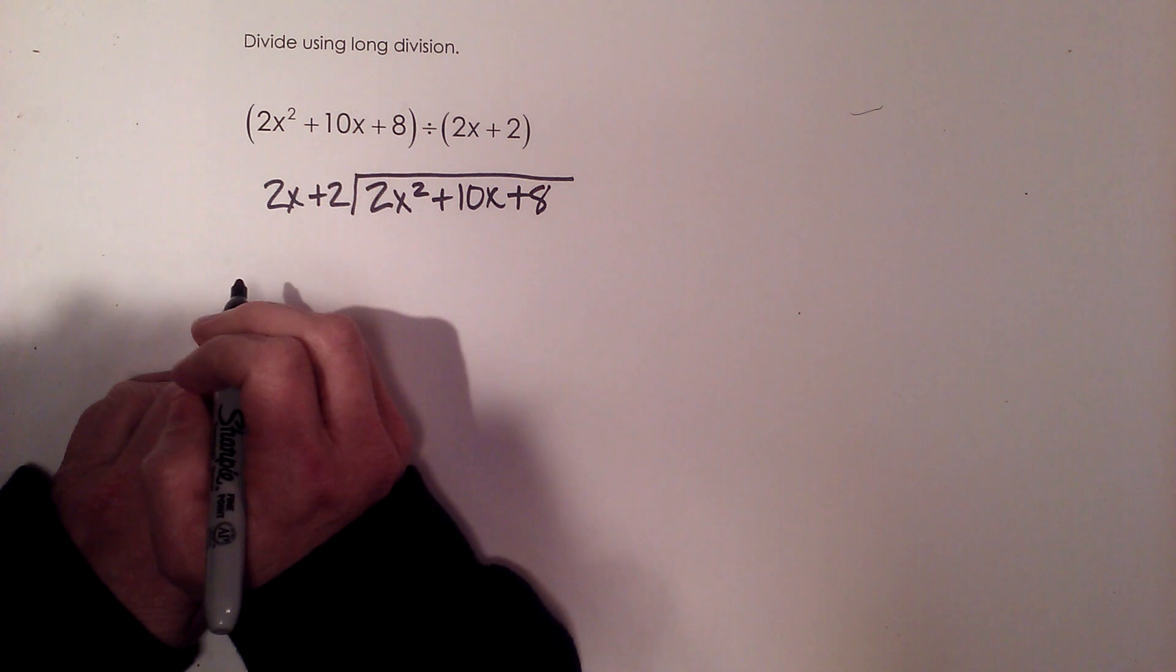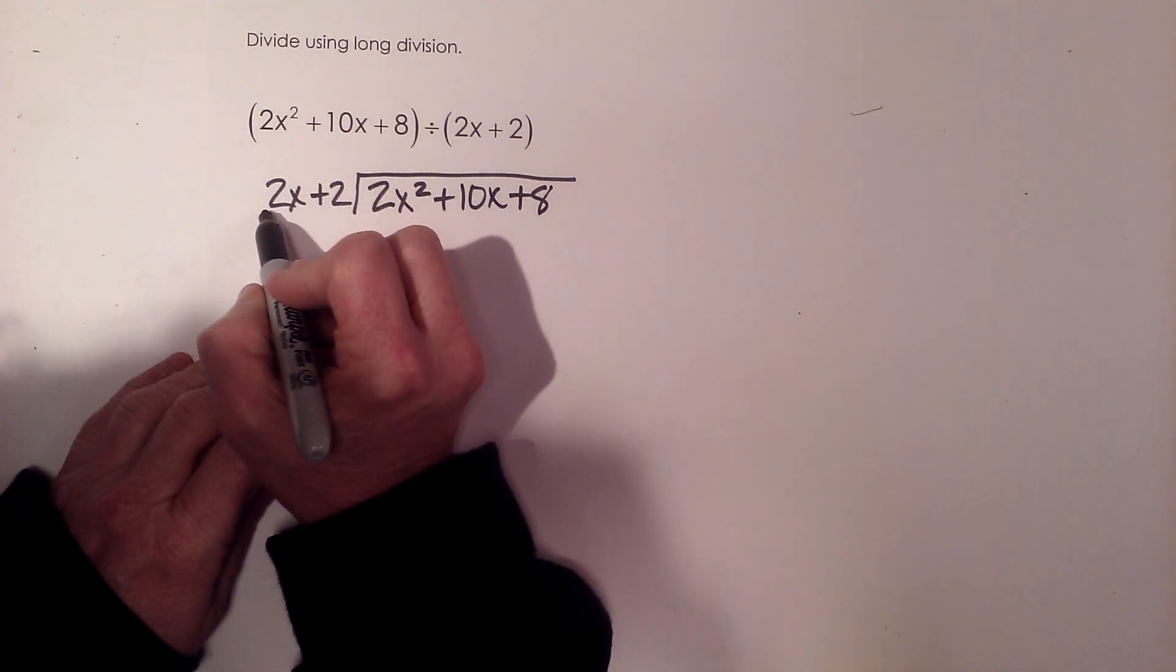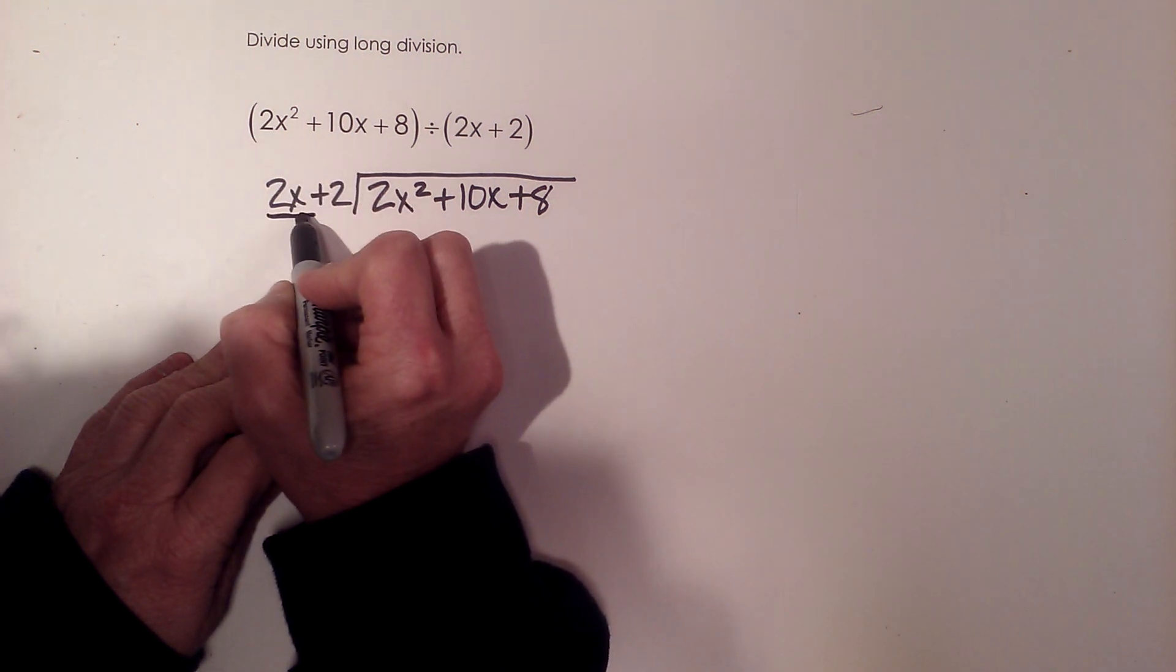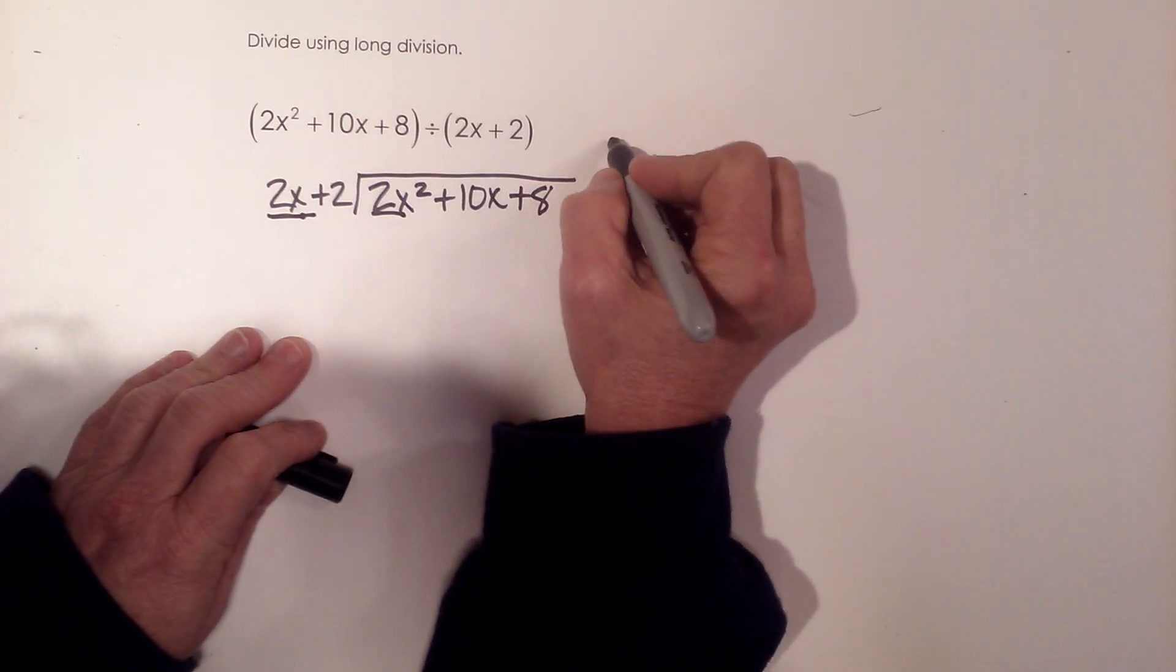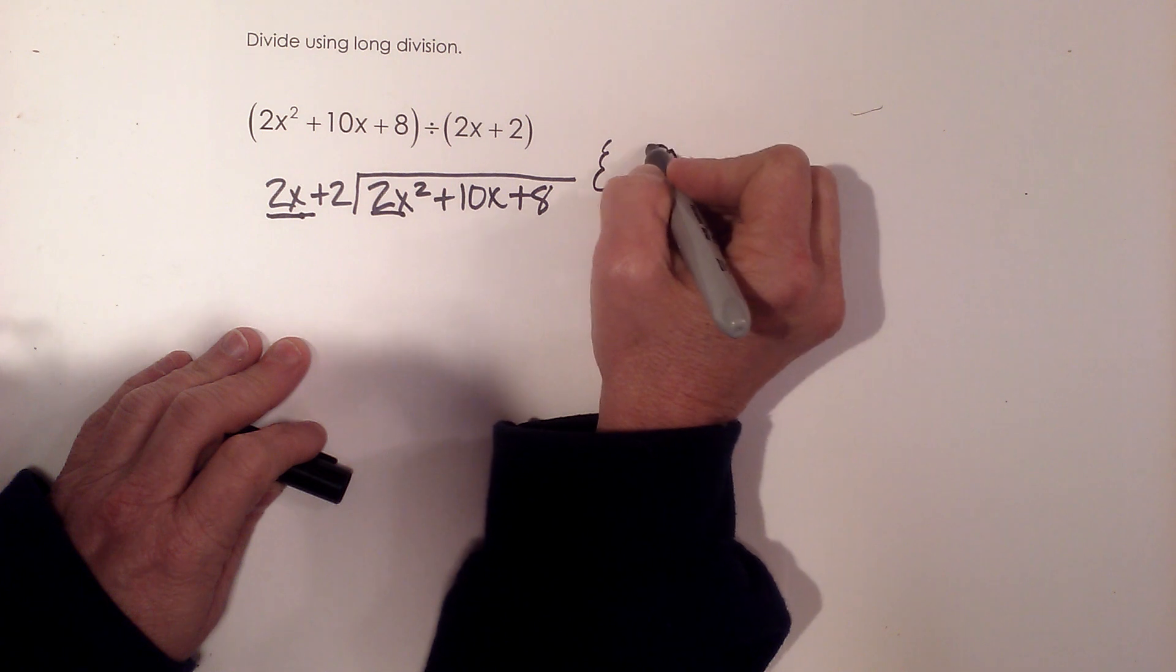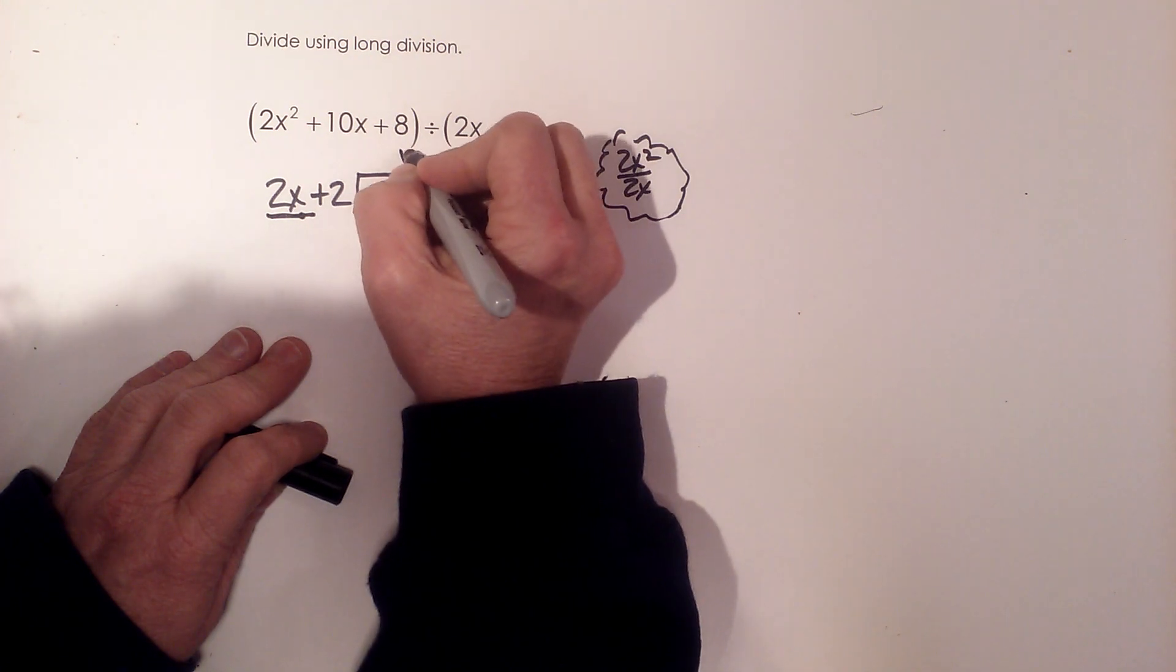Now what we're going to do is ask ourselves: what do we multiply 2x by to get 2x squared? In other words, in your little think bubble, you're saying 2x squared divided by 2x. What is that? And that's just x.